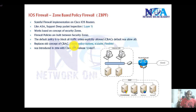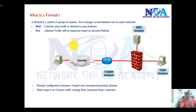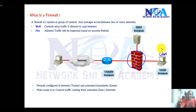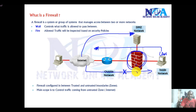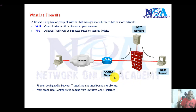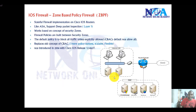Getting back to previous concepts, a firewall is basically a system or group of systems that manages access between two or more different networks. For example, users on the LAN should be allowed to access the internet, but traffic from the internet should not enter the LAN. At the same time, internet users should be able to access services on the DMZ. This can all be configured using a Cisco IOS router enabled with the Zone-Based Firewall feature.